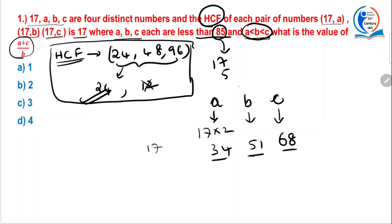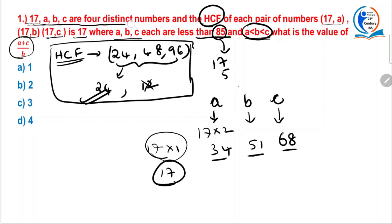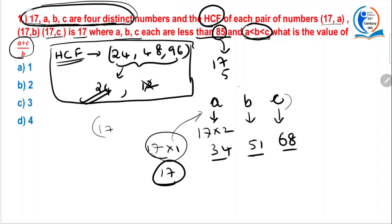Why did I not take 17 into 1? Because it is 17, and they have given there are 4 distinct numbers. 17 is already one of the 4 numbers, so if I take 17×1 for A, B, or C, it will again become 17. That would violate the rule. So not violating that rule, we have to take these numbers.